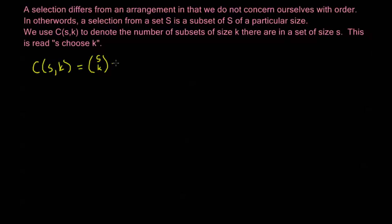Now we can calculate this by a formula here. S choose K is going to equal S factorial over K factorial times S minus K factorial.